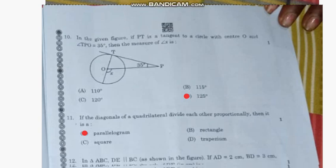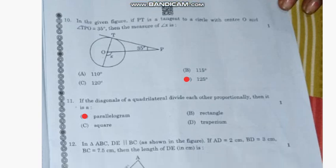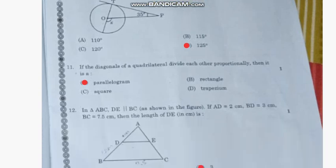Question number 10: In the given figure, if PT is a tangent to a circle with center O and angle TPO = 35 degrees, then the measure of angle x is—the correct answer is option D, 125 degrees.